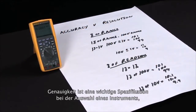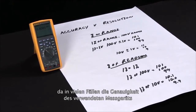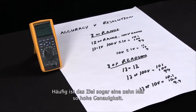Accuracy is an important specification when selecting an instrument because in many cases you want the accuracy of the meter you're using to be at least four times the accuracy of the measurement you're taking. A lot of times ten times is actually the goal.